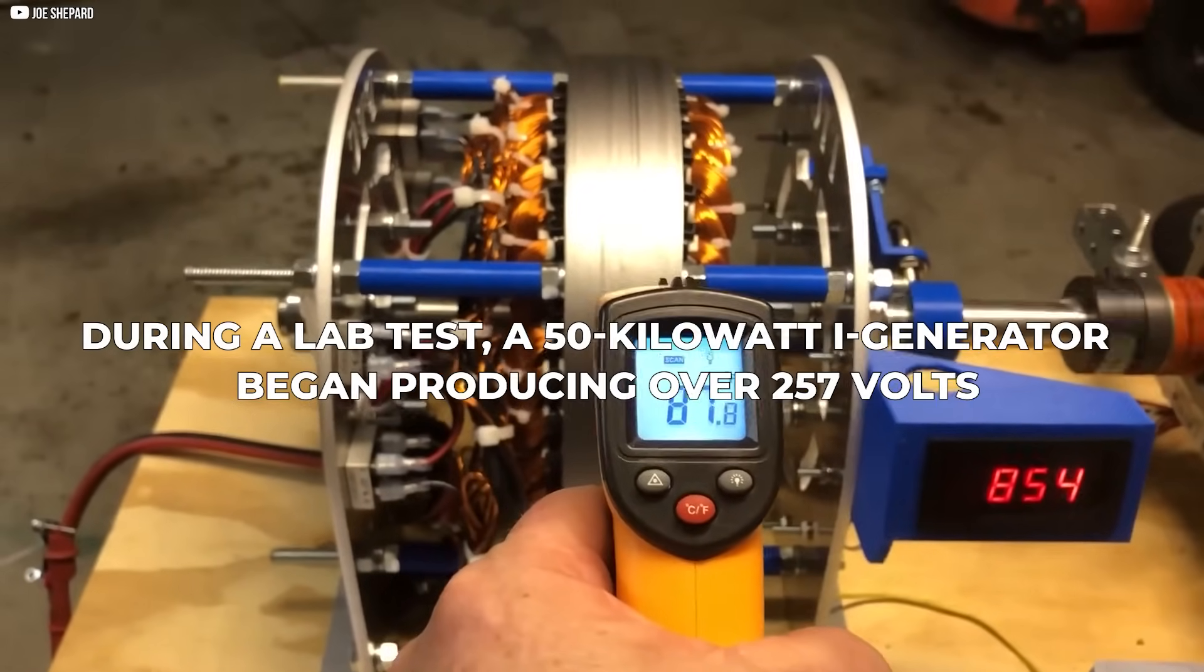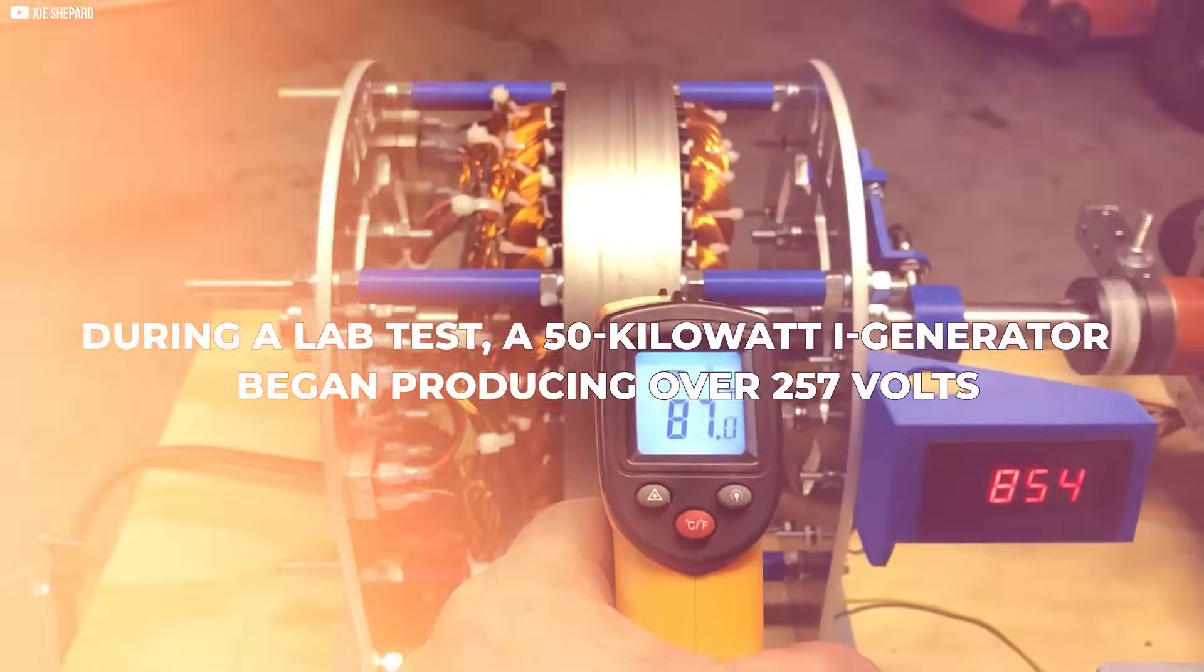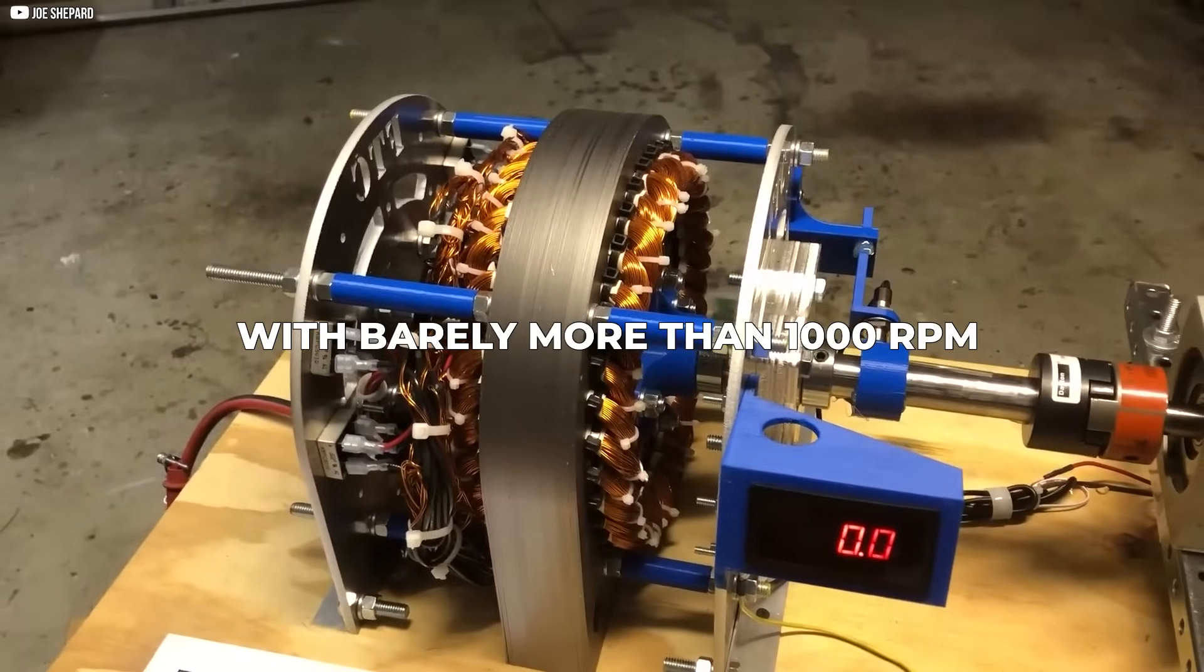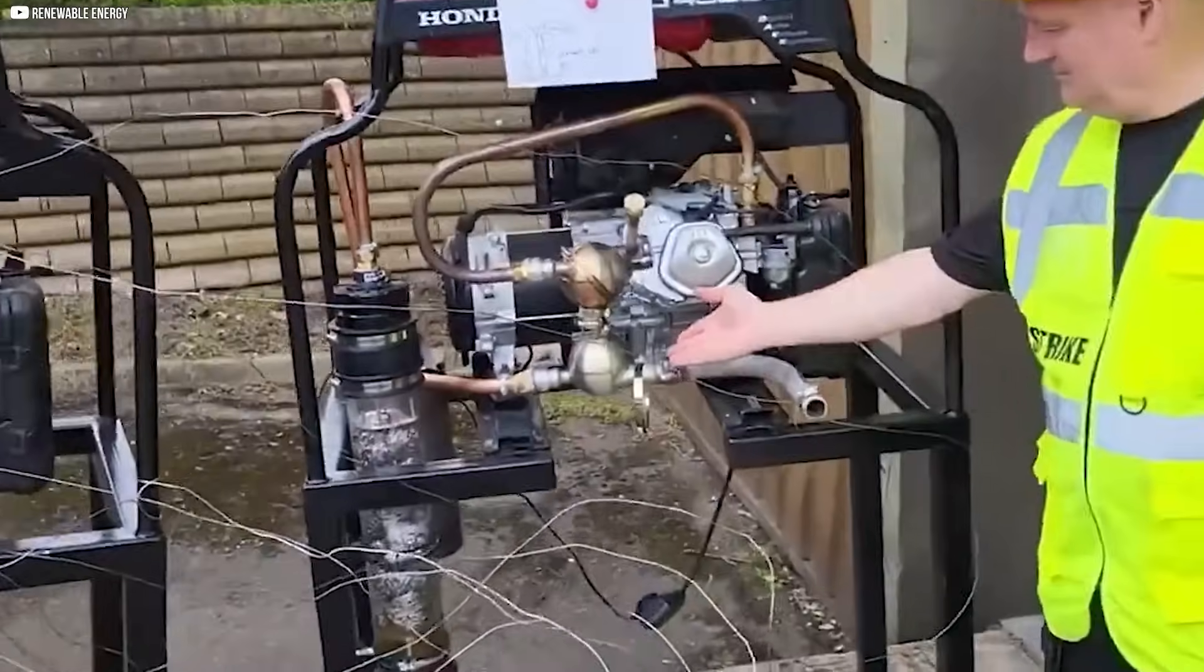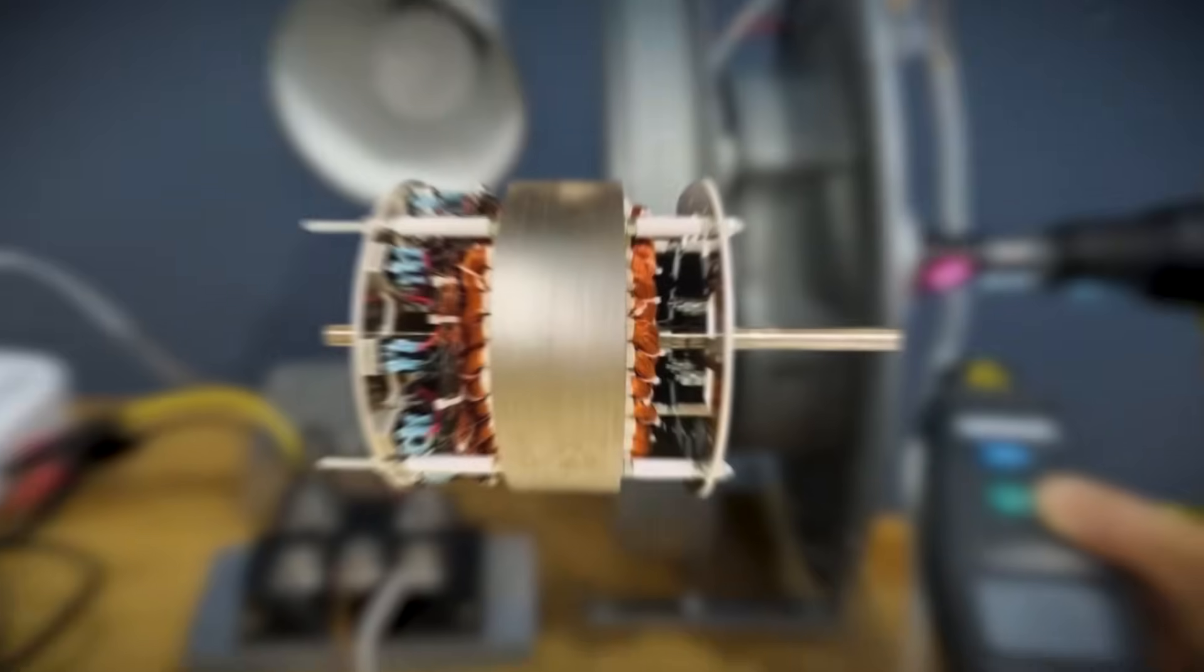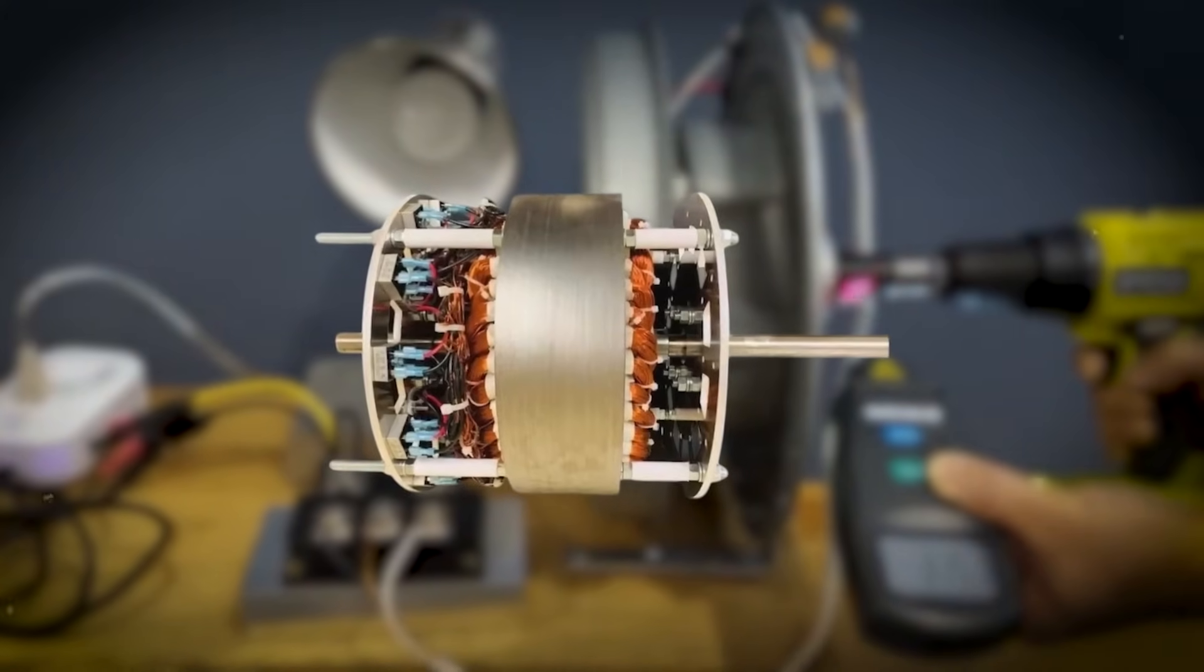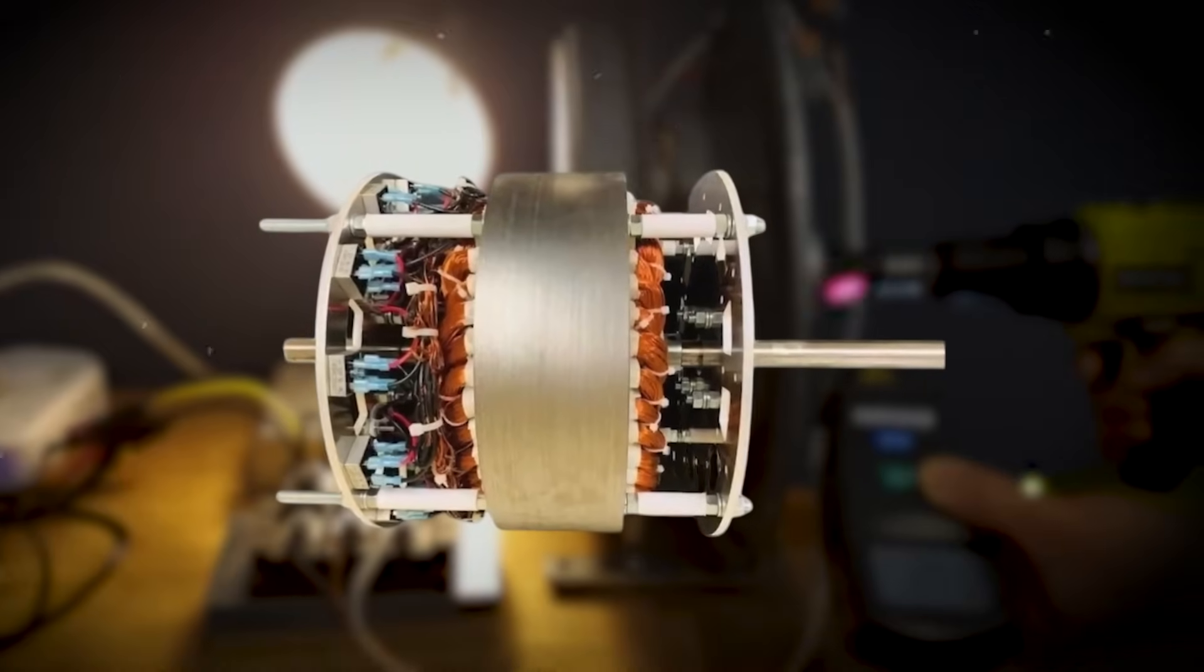...a 50-kilowatt iGenerator began producing over 257 volts with barely more than 1000 RPM. That's impressive. Most conventional generators need far more speed and more fuel to reach that kind of output. This means the iGenerator works harder, smarter, and greener from the very start.